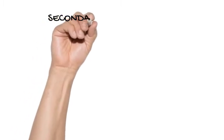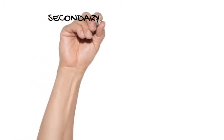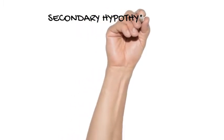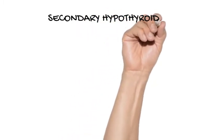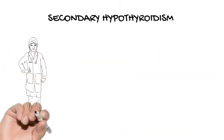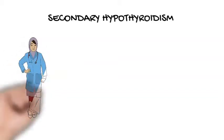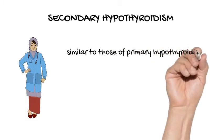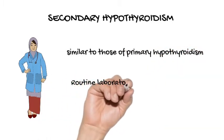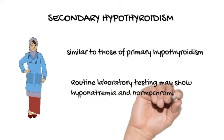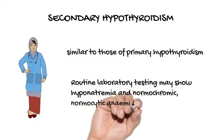Secondary hypothyroidism. Clinical features of secondary hypothyroidism are similar to those of primary hypothyroidism and include fatigue, decreased energy, constipation, weight gain, dry skin, coarse hair, hoarseness, cold intolerance, facial puffiness, impaired memory or concentration, bradycardia, and a delayed relaxation phase of the deep tendon reflexes. Routine laboratory testing may show hyponatremia and normochromic, normocytic anemia.